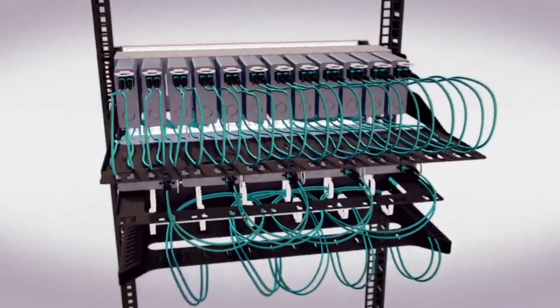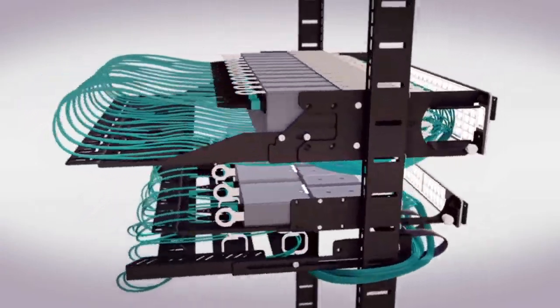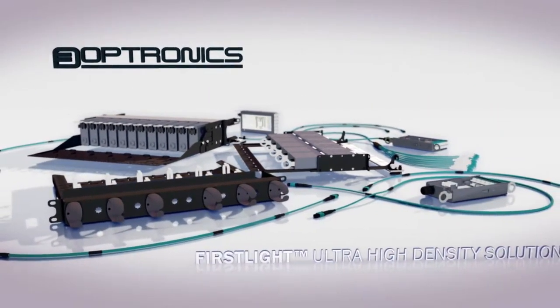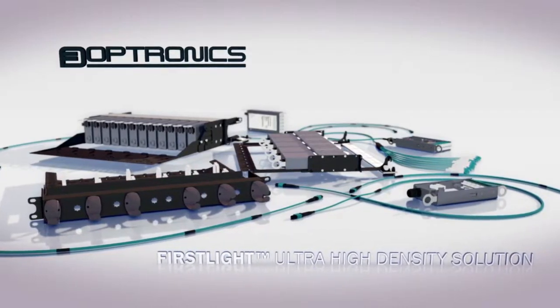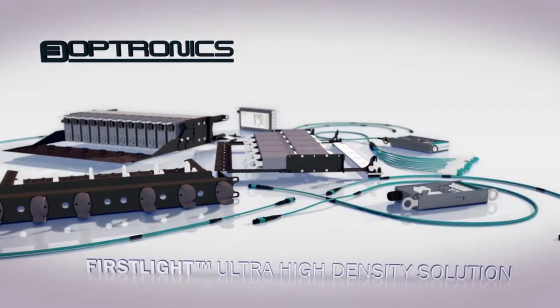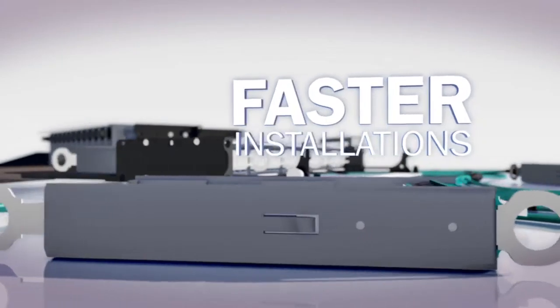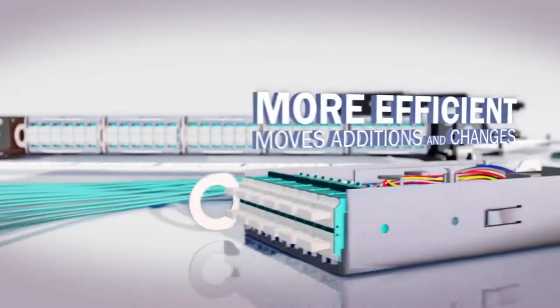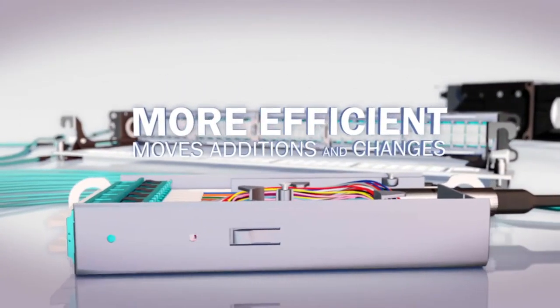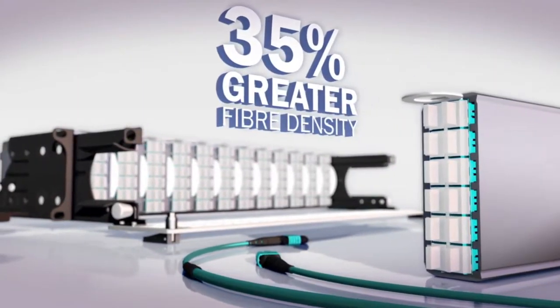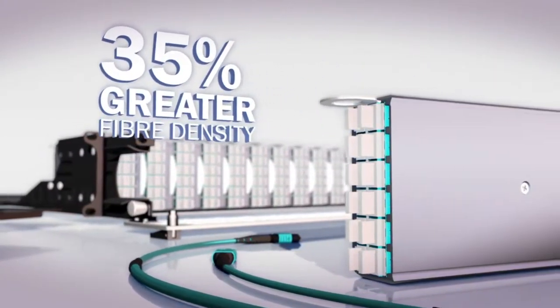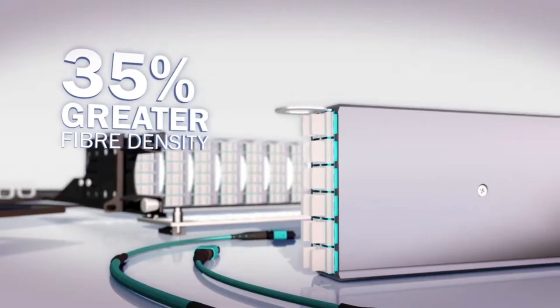Today's businesses depend on their optical networks to maintain and protect critical data. The FirstLight ultra-high density solution has been engineered to exceed industry demands. It offers faster installation time, more efficient moves, additions and changes, and greater fiber density by over 35% when compared to traditional installation methods.